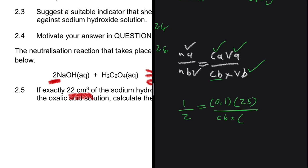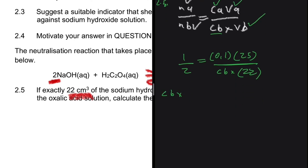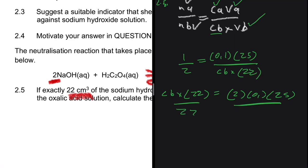We use 22 cm³ for the volume of the base. Since volumes appear as a ratio, converting to dm³ is unnecessary — dividing numerator and denominator by 1000 changes nothing. Cross-multiplying gives: c_B times 22 equals 2 times 0.1 times 25. Dividing both sides by 22, the concentration of the base equals 0.23 mol/dm³.